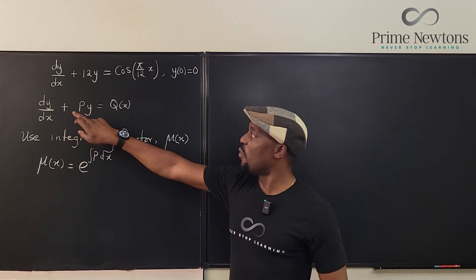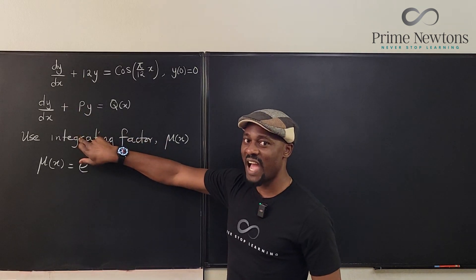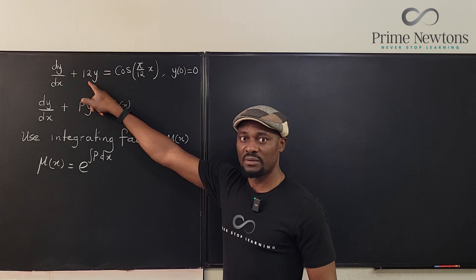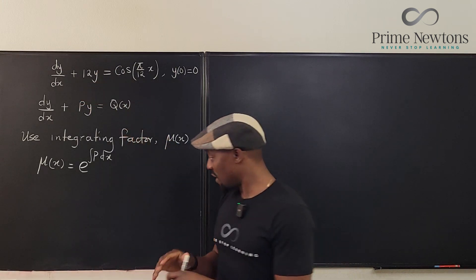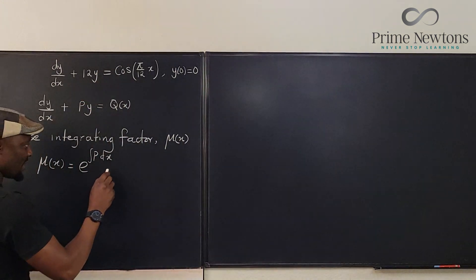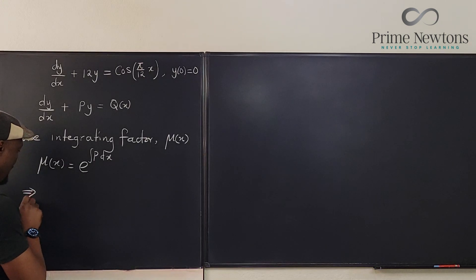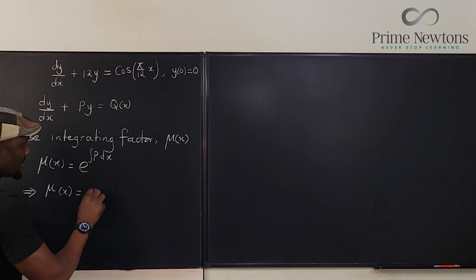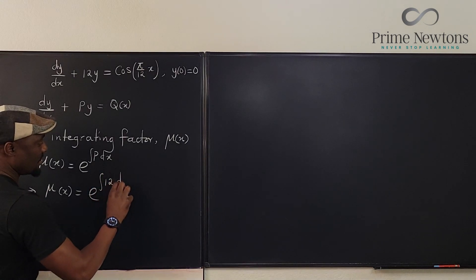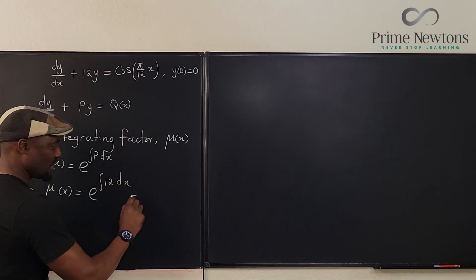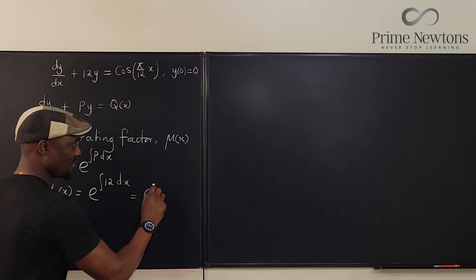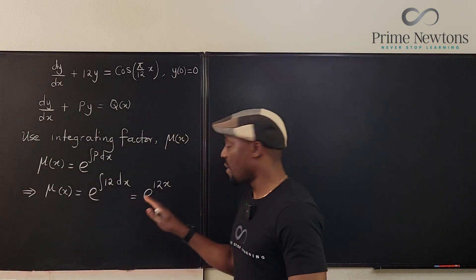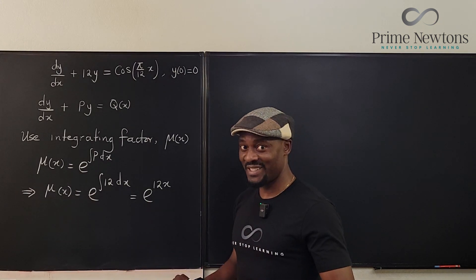Going back to our equation, P is 12. So this implies that μ(x) = e to the integral of 12 dx. Integrating that gives us e to the 12x. Forget about plus C at this point — we're not doing plus C here.